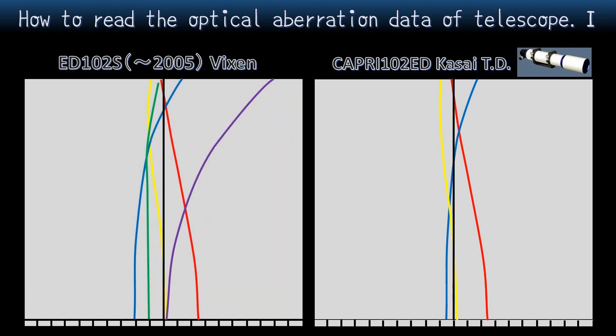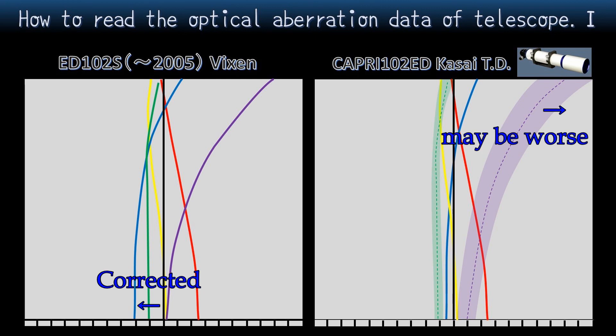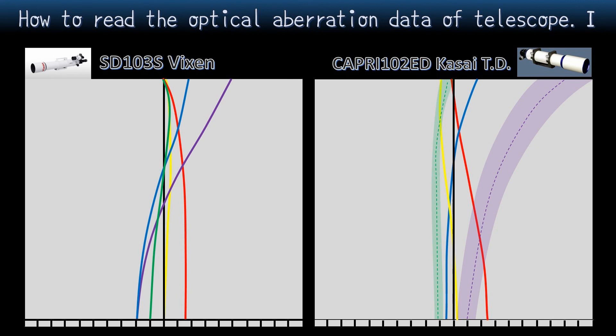We can infer this question using this graph. This is a graph of ED-102S, which is an old product of Vixen. And it was sold until 2005. We can find that Capri's graph is exactly like this. So the green and purple lines can be added like this too. Because the blue line of Capri is to the plus side, the purple line may be worse. In this way, by erasing the outer two lines, they are showing less aberration.